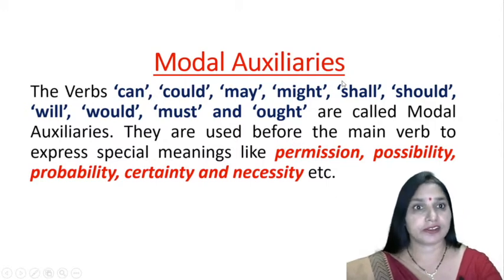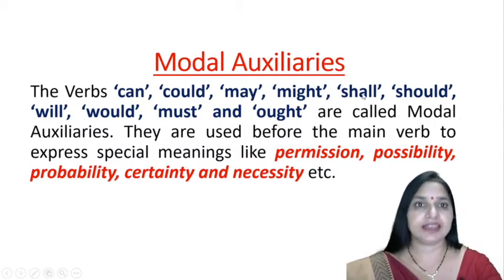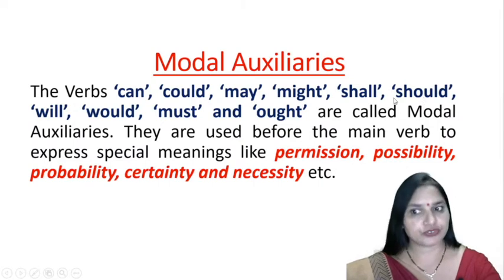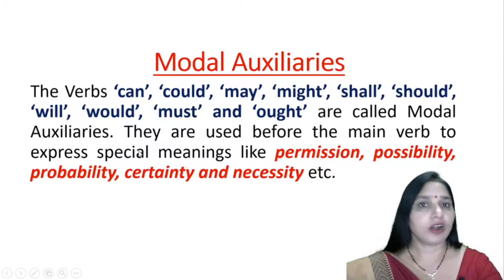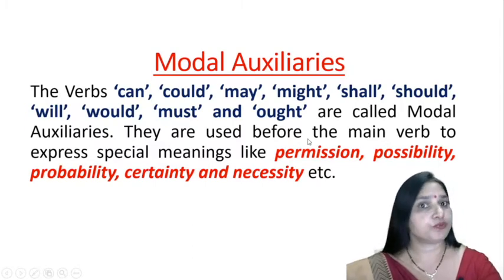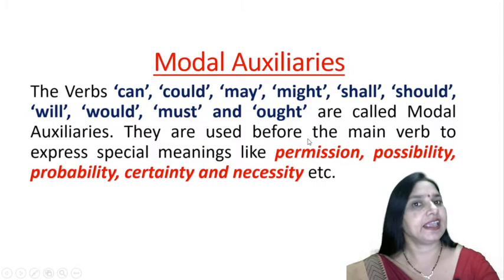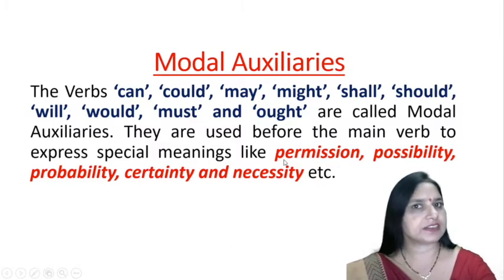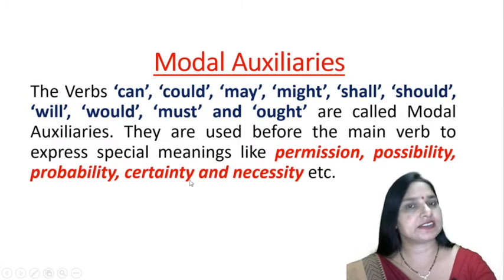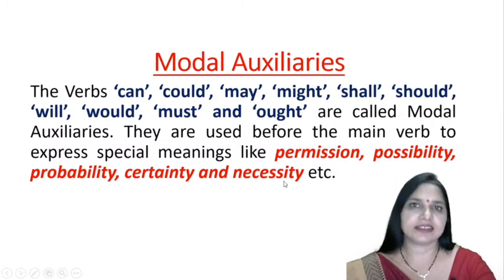So, modal auxiliaries — can, could, may, might, shall, should, will, would, must and ought — are helping verbs. They are used before the main verb and they help the main verb to express special meanings like permission, possibility, probability, certainty and necessity.